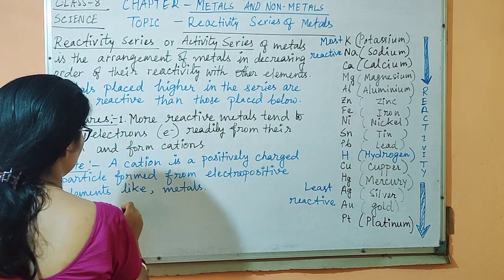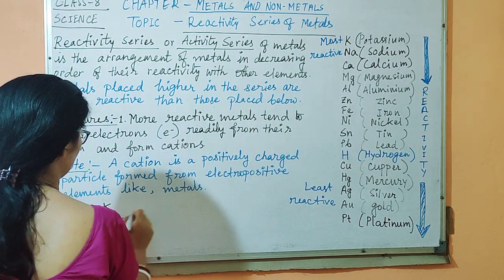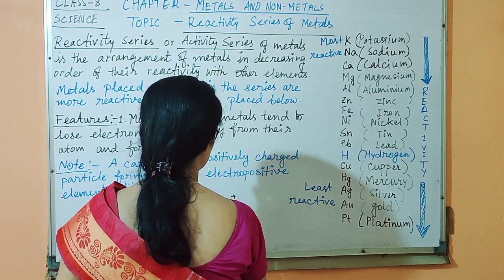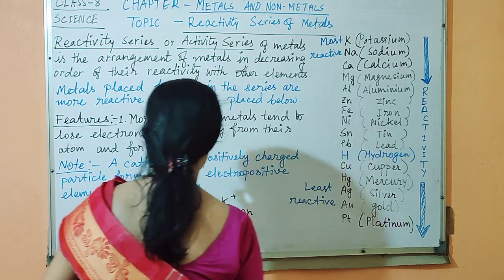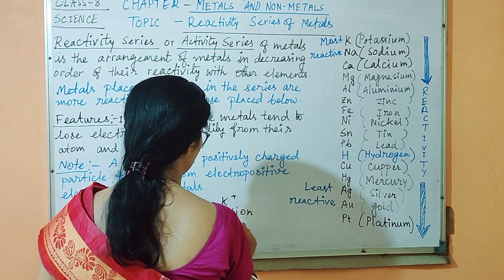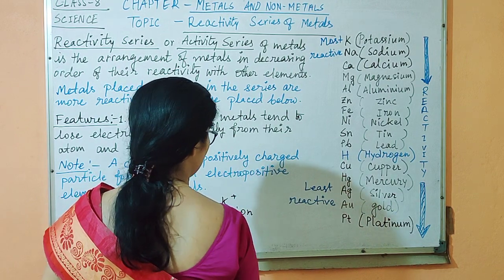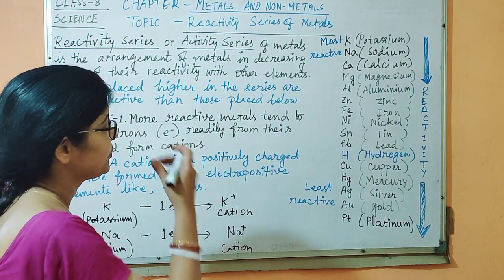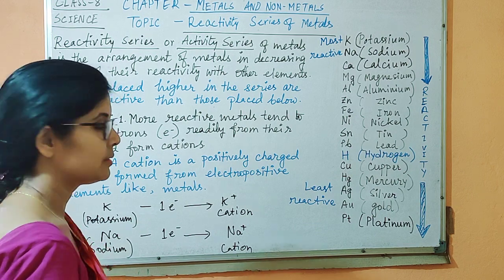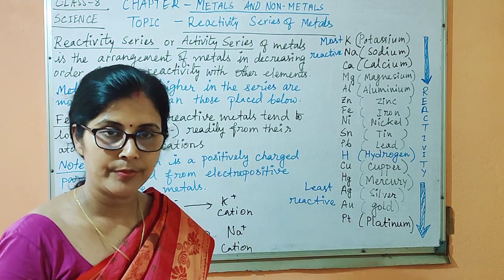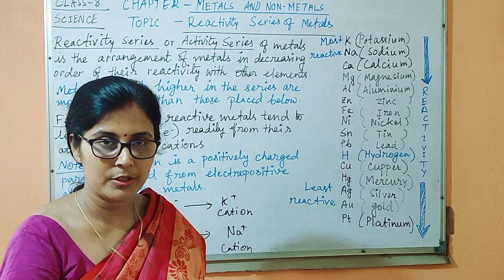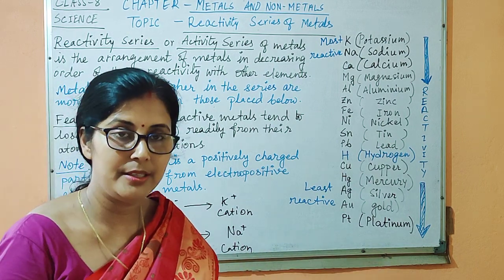That is, they form cations. For example, when a potassium atom loses an electron, it forms a potassium ion, which is a cation. Similarly, sodium can lose one electron and form a sodium ion, which is also a cation. In this way, metals have the tendency to lose electrons easily. More reactive metals lose electrons more easily, which is why they react with oxygen, water, acids, and bases faster. Being electropositive in nature, these act as reducing agents easily.